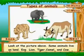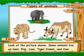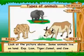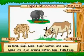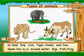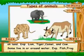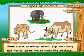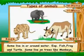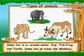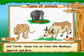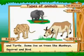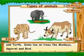Look at the picture above. Some animals live on land — example, lion, tiger, camel and cow. Some live in or around water — example, fish, frog and turtle. Some live on trees, like monkeys, squirrel and bird.